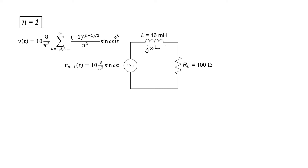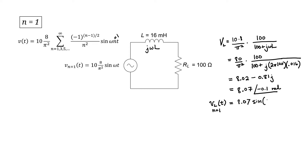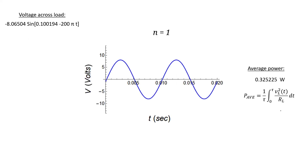Let's find the voltage across the load resistor in phasor form using voltage division: the source voltage times the voltage divider. My operating frequency is 100 Hz and the inductance is 16 millihenries. This is just a complex number, so I can write it in both rectangular and polar form. Now that I have the voltage across the load resistor in phasor form, I can write it in the time domain as well. Here we have the voltage across the load resistor graphed out — we've truncated our infinite series stopping at just the first term, so it's just a sine wave. The formula is shown on the left, and on the right I've used it to calculate average power truncating at the first term. The average power here is wrong, but as we include more and more terms we should converge to the correct answer.